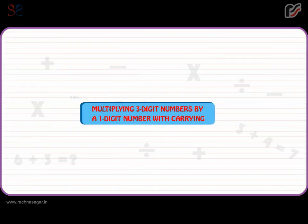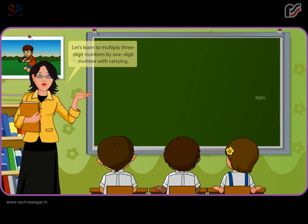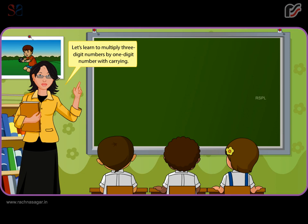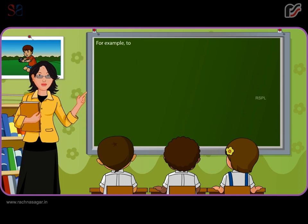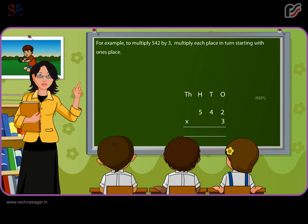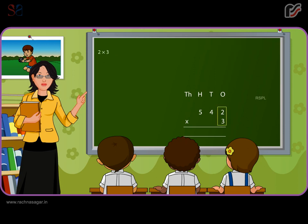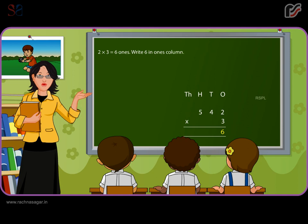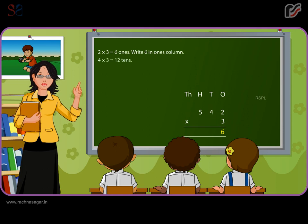Multiplying three-digit numbers by a one-digit number with carrying. Let's learn to multiply three-digit numbers by a one-digit number with carrying. For example, to multiply 542 by 3, multiply each place in turn starting with the ones place. 2 multiplied by 3 is equal to 6 ones — write 6 in the ones column. 4 multiplied by 3 is equal to 12 tens — write 2 in the tens column.